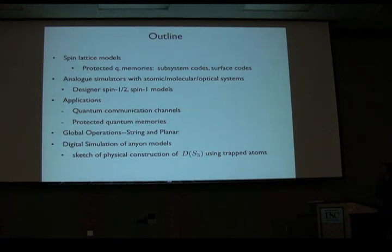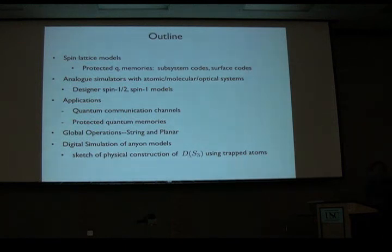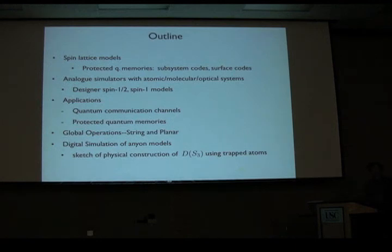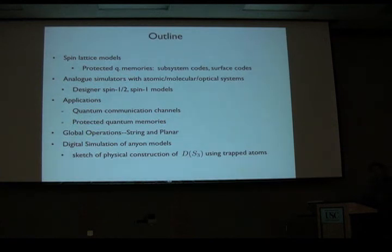The mechanism for doing that will be what I call an analog simulation with atomic molecular optical systems. By analog, I just mean I'll be looking at ways to engineer a Hamiltonian that will be left always on — no stroboscopic pulsing to approximate a Hamiltonian, but engineering the microscopic physics so that you approximate what you want. The hope is that even if you don't get it exactly right, you might still maintain some of the desirable properties.